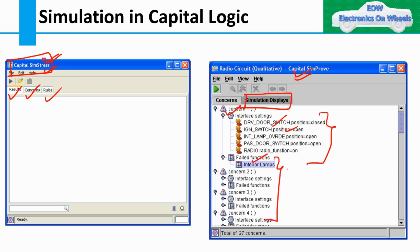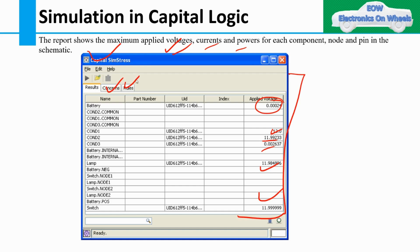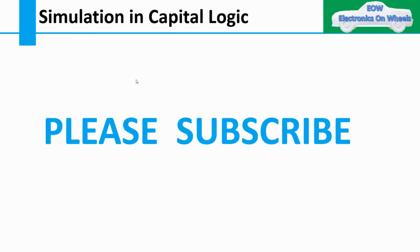Whether the radio function is on or the radio function switch position is off — these types of settings you will see here first, followed by the failed function. For Capital Sim Stress results, the report shows the maximum applied voltage, current, and power for each component, node, or pin in the schematic. You can see the applied voltage at a particular node, the Concerns, and the Rules — which are the interface settings you have applied.